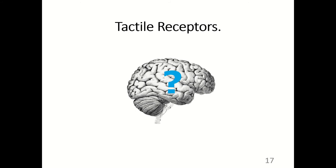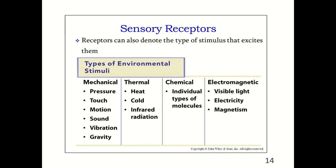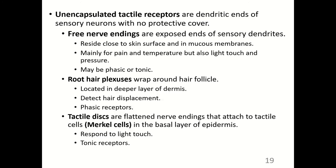Tactile receptors are the most abundant receptor in the body — mechanoreceptors of the skin and mucous membranes, responding to pressure, touch, motion, vibration, gravity, and even sound. Receptors can be encapsulated or unencapsulated. Unencapsulated tactile receptors include free nerve endings, root hair plexuses, and tactile discs. Free nerve endings are exposed ends of sensory dendrites, residing close to the skin surface and in mucous membranes — mainly for pain and temperature, but also light touch and pressure, and may be phasic or tonic.